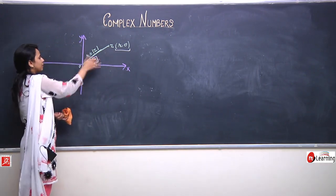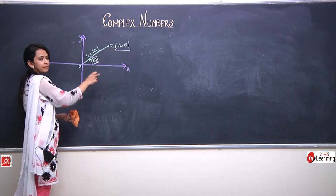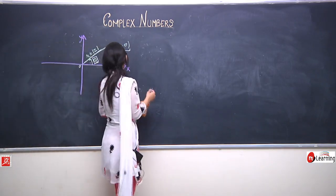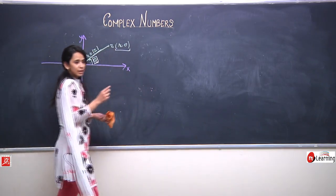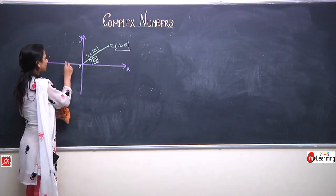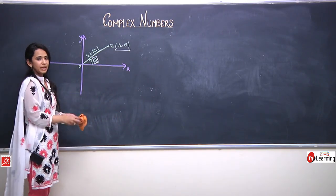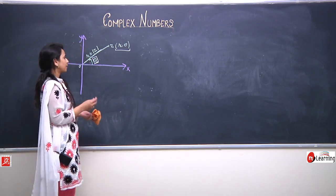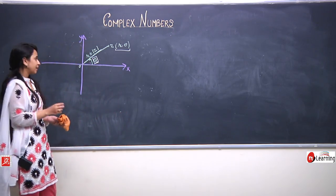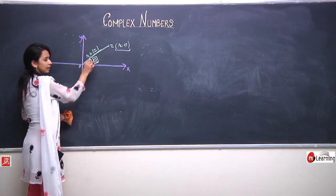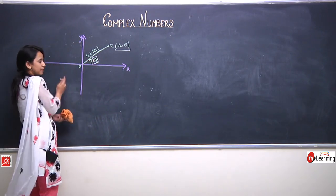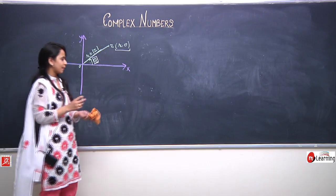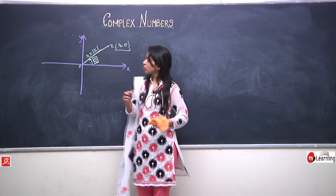We can define theta to lie between 0 to 2pi or minus pi to pi. For our convenience, any value of theta that lies between minus pi to plus pi will be called the principal argument of z.